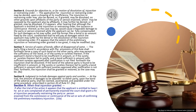Section 8. Judgment to include damages against party and sureties. At the trial, the amount of damages to be awarded to either party, upon the bond of the adverse party, shall be claimed, ascertained, and awarded under the same procedure prescribed in Section 20 of Rule 57. Section 9. When final injunction granted. If after the trial of the action it appears that the applicant is entitled to have the act or acts complained of permanently enjoined, the court shall grant a final injunction perpetually restraining the party or person enjoined from the commission or continuance of the act or acts, or confirming the preliminary mandatory injunction.